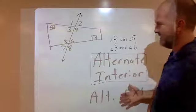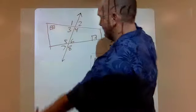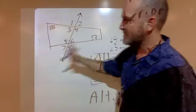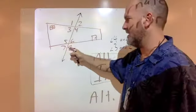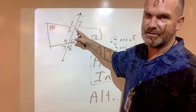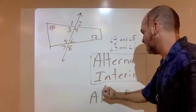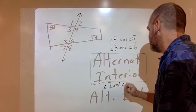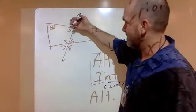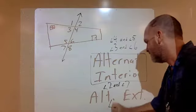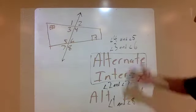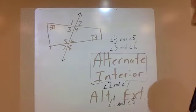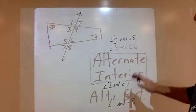Alternate exterior follows the same logic. They're on the exterior of the house — angles 1, 2, 7, and 8. They're on alternate or opposite sides of the transversal and they're diagonal from each other. So 7 and 8 are not alternate exterior, just like 3 and 4 were not. But angle 2 and angle 7 are alternate exterior. And then you also have angle 1 and angle 8. So there are two correct answers if you're asked to name a pair of alternate exterior angles.